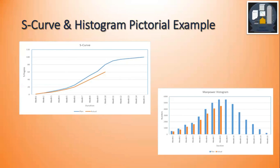One thing to note is that the blue line may represent the early dates baseline, and there may also be a late date S-curve — which is not shown — that may be below the orange curve. If so, it would mean the project is actually within schedule. However, generally when the actual curve is below the baseline curve, we say it is behind schedule.